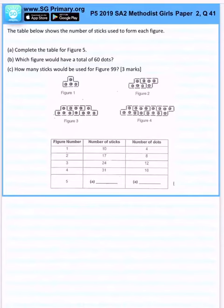The table below shows the number of sticks used to form each figure. Complete the table for figure 5. Okay, so figure 5. Now we know that the sequence here is always plus 7, right? So definitely this will be 38.